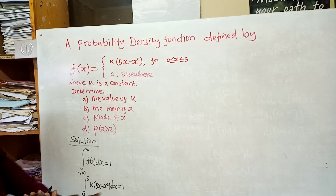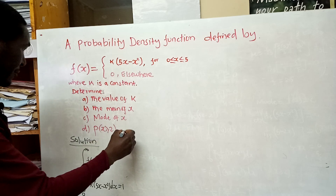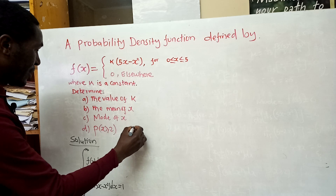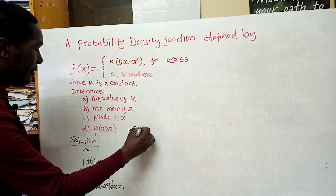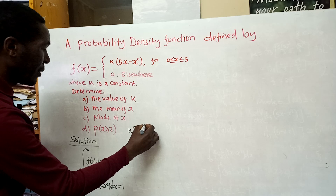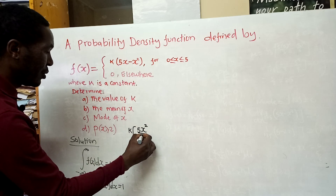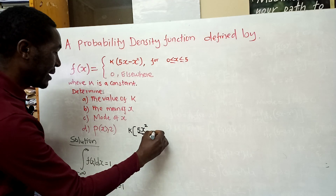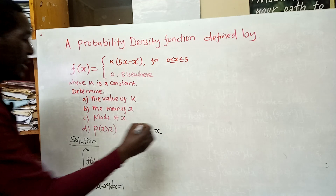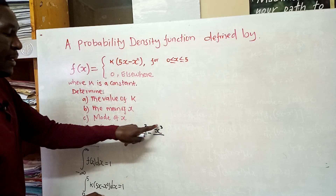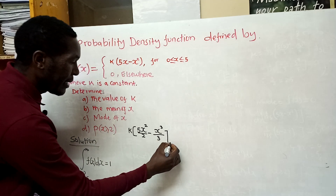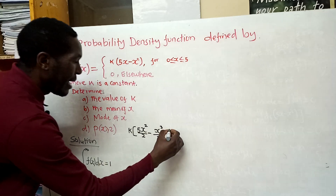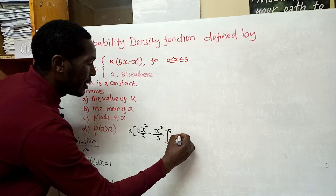We work this integral out between the limits of 0 and 5. We take k outside as a constant. Integrating 5x gives 5x²/2, and integrating x² gives x³/3. We place the lower limit at the bottom and the upper limit at the top, and equate this to 1.